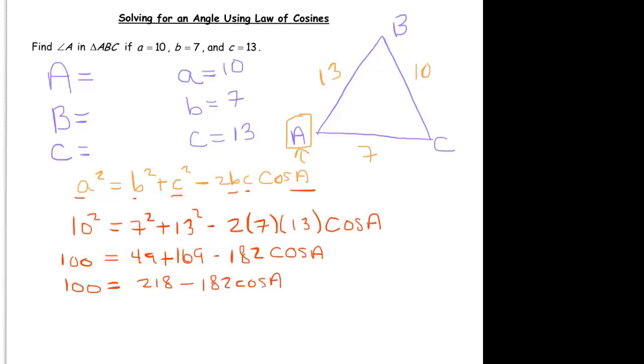Now I'm going to pause here, because this is where students make mistakes. And the mistake they make has nothing to do with the trigonometry, it's algebra. Cosine of A is the variable right now. So this is like 218 minus 182 times x.